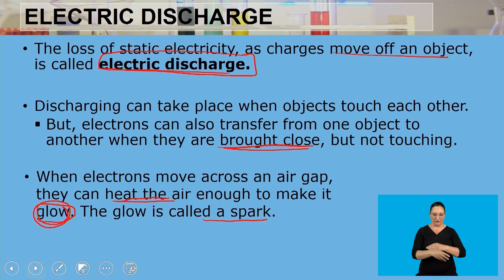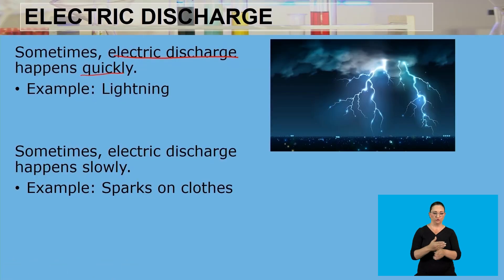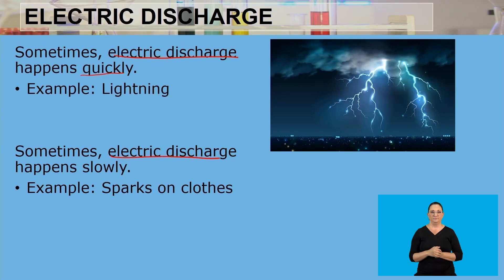You might have seen that whenever you take off your jersey there are those sparks — that's when electrons are being transferred from one material to the other, heating the air enough to make a glow. It's not magic! Sometimes electric discharge happens so quickly we cannot measure it — that's lightning. Other times it happens slowly, like the spark you see taking off your jersey.